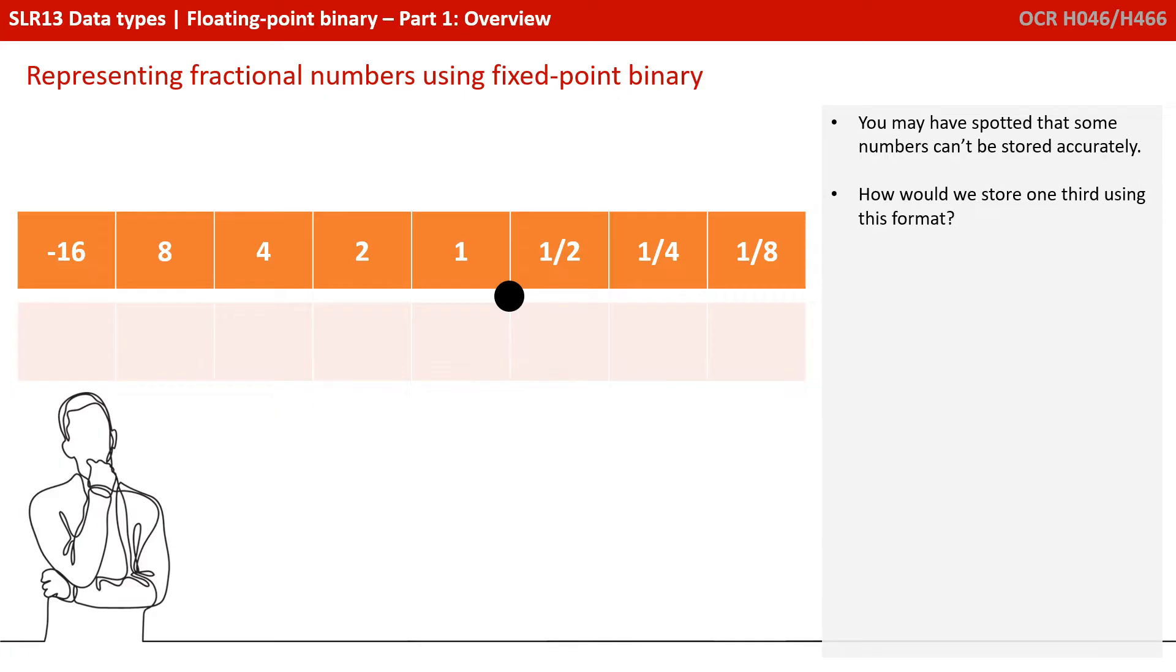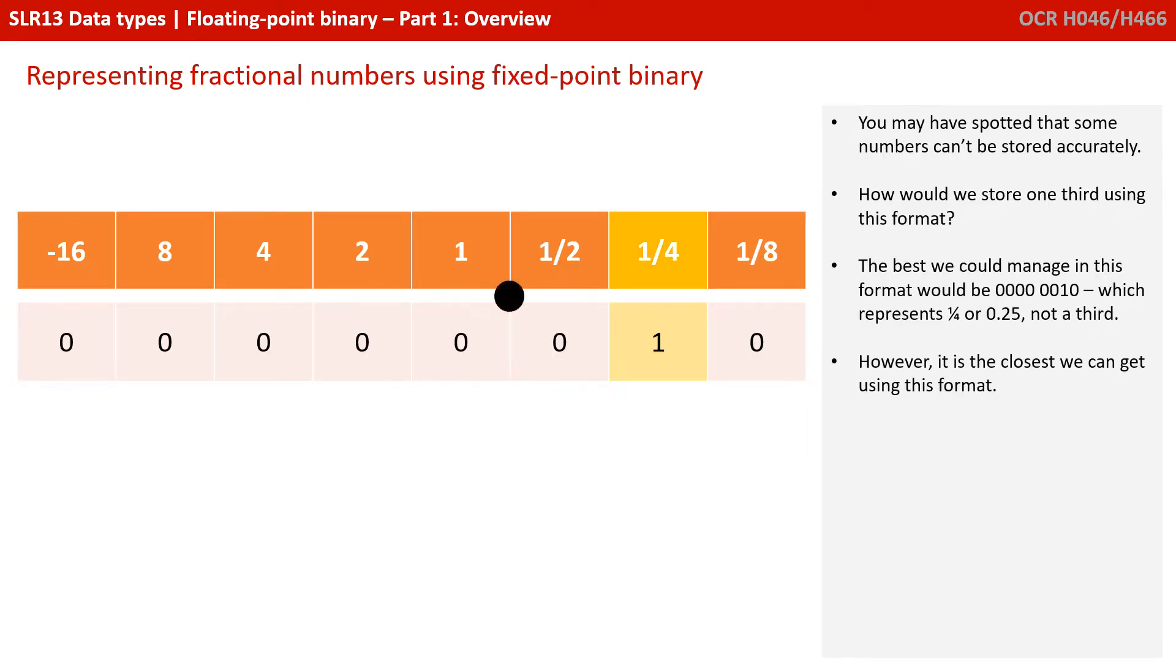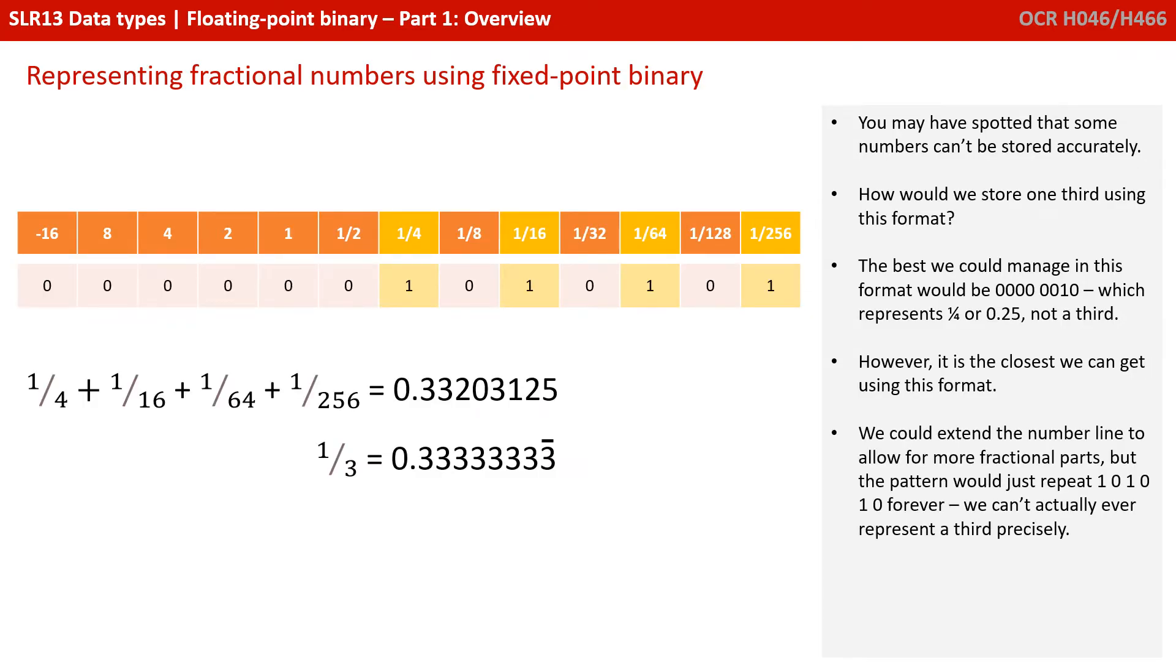Now, you may have spotted that some numbers can't be stored accurately at all. So looking at the format we've got on the screen now, how would you store a third? Well, the best we could manage in this format would be 00000010, which represents a quarter or 0.25, not a third. However, it's the closest we can get in this format. We could extend the number line to allow for more fractional parts and therefore more accuracy, but the pattern just repeats, 1, 0, 1, 0, 1, 0, and it actually repeats forever. We can't actually ever represent a third precisely.